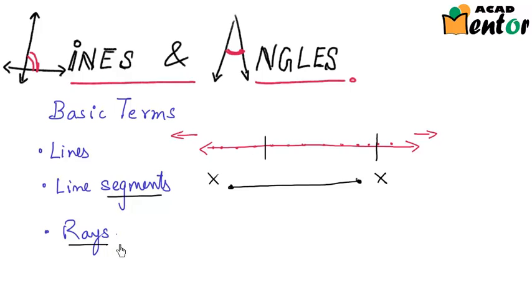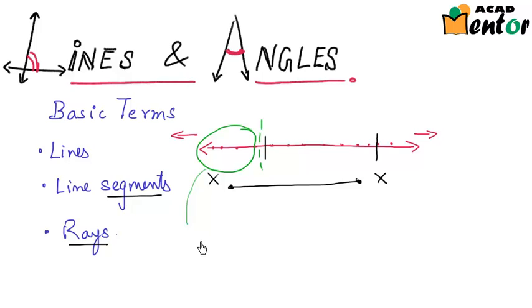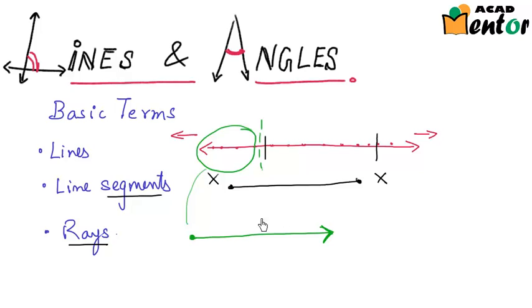Finally, let's come to a ray. A ray is again a part of this particular line, but what I do is I just make one cut and take the rest of the line. So a ray has one end point and it can be extended in the other direction. It's a one dimensional figure that has one end point and can be extended in the other direction.